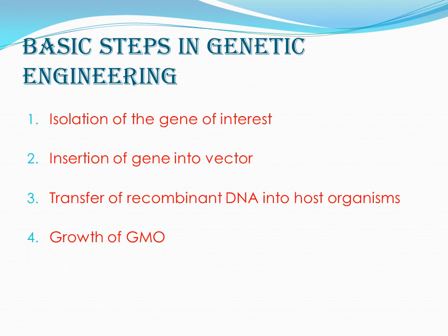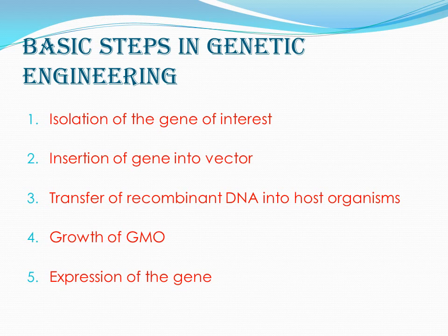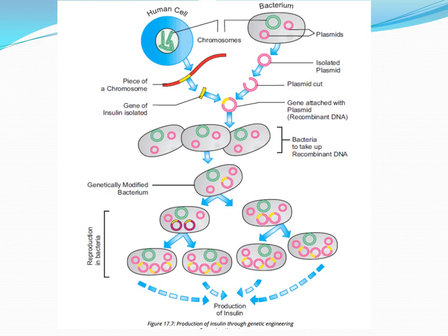The host organism is then converted into a GMO — a genetically modified organism — in which the gene of interest gets expressed. All these steps will be discussed in detail with the help of a diagram showing the production of the insulin gene through genetic engineering, completed in five steps. The first step is the isolation of the gene of interest; in this case, the genetic engineers identify the insulin gene.